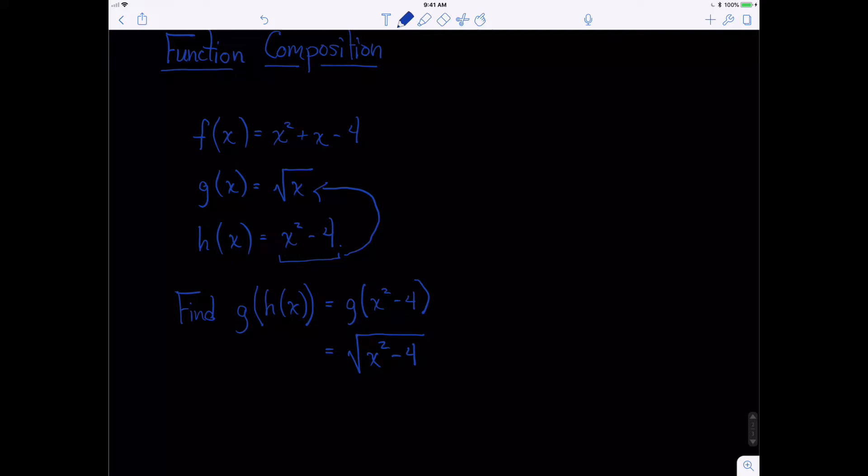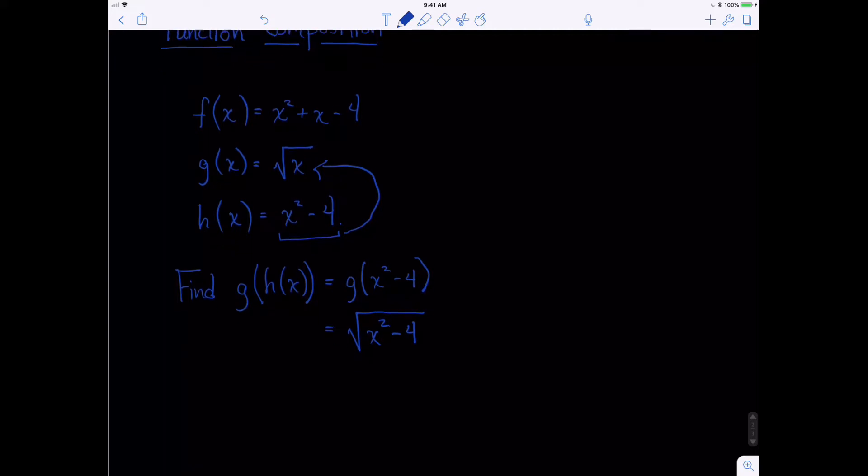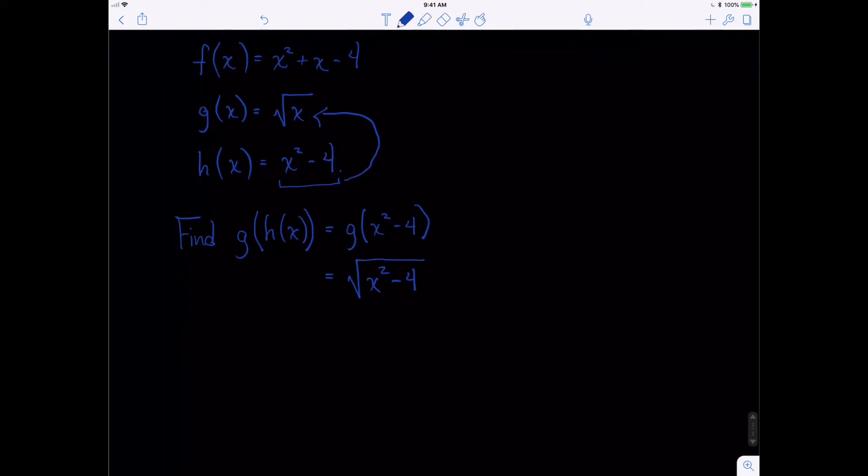Now, let's see what happens if we switch these. For example, let's try h of g of x. This means that we take and we put the g of x inside of the first set of parentheses. So that becomes h of the square root of x.